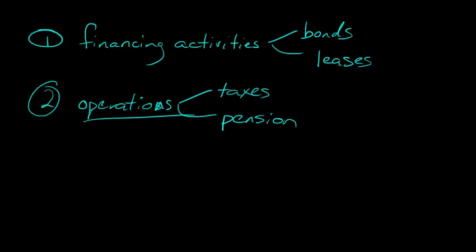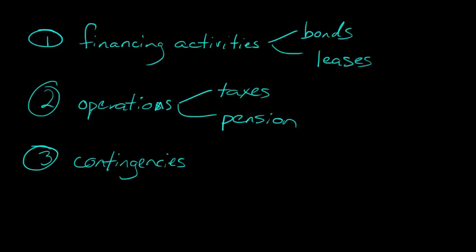Beyond normal operations, you could also see contingencies — things where you're not sure whether they're going to require a sacrifice of assets down the road. You go ahead and report this contingency. It could be something like a lawsuit, or a warranty liability that you have for the future — something long-term in nature that won't require the sacrifice of current assets.